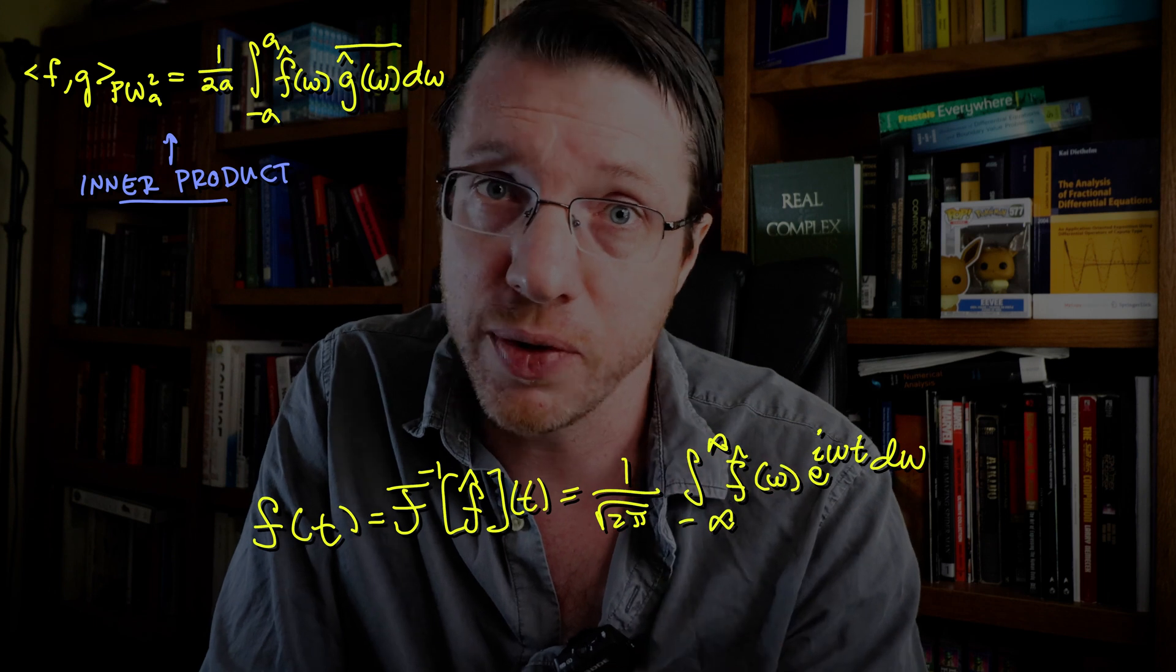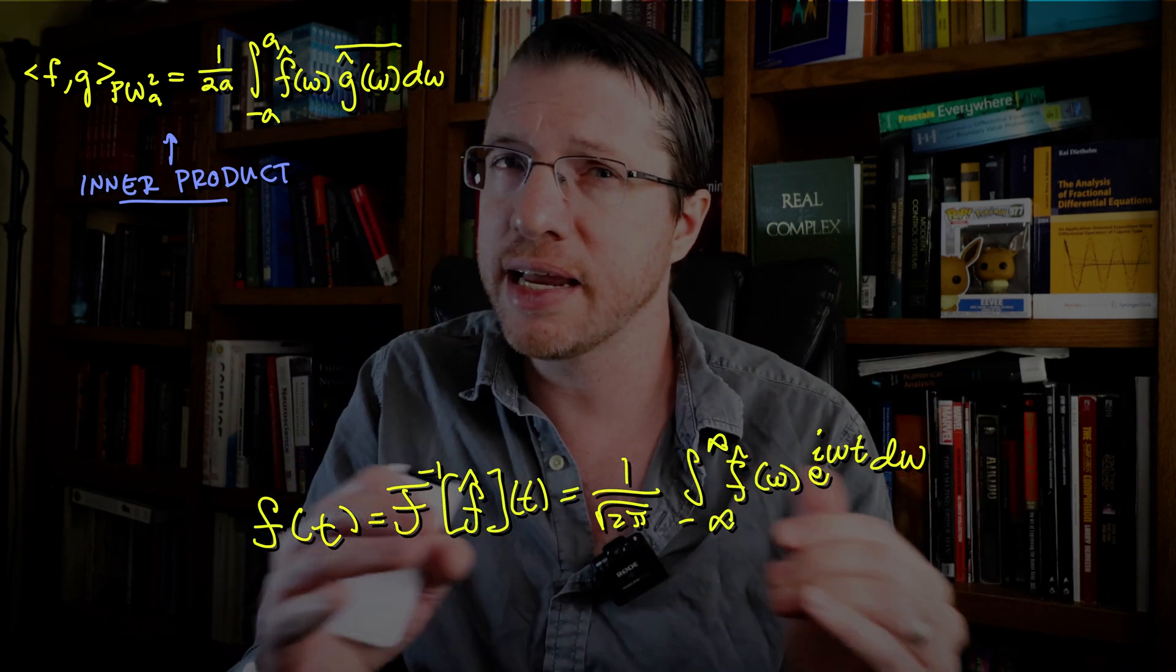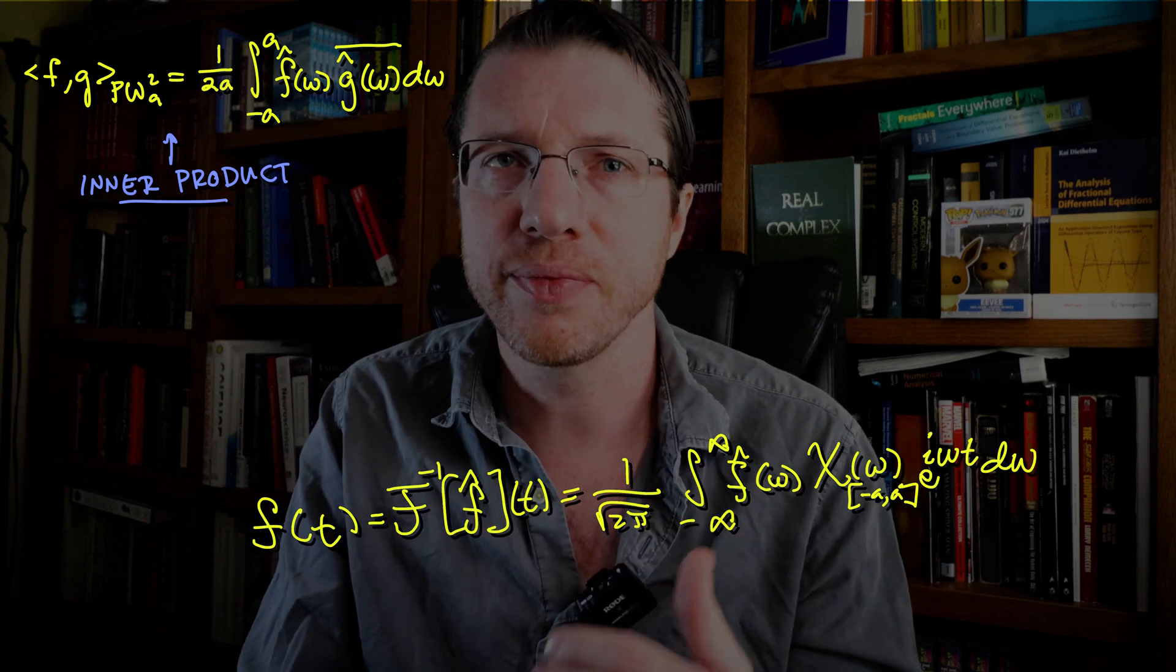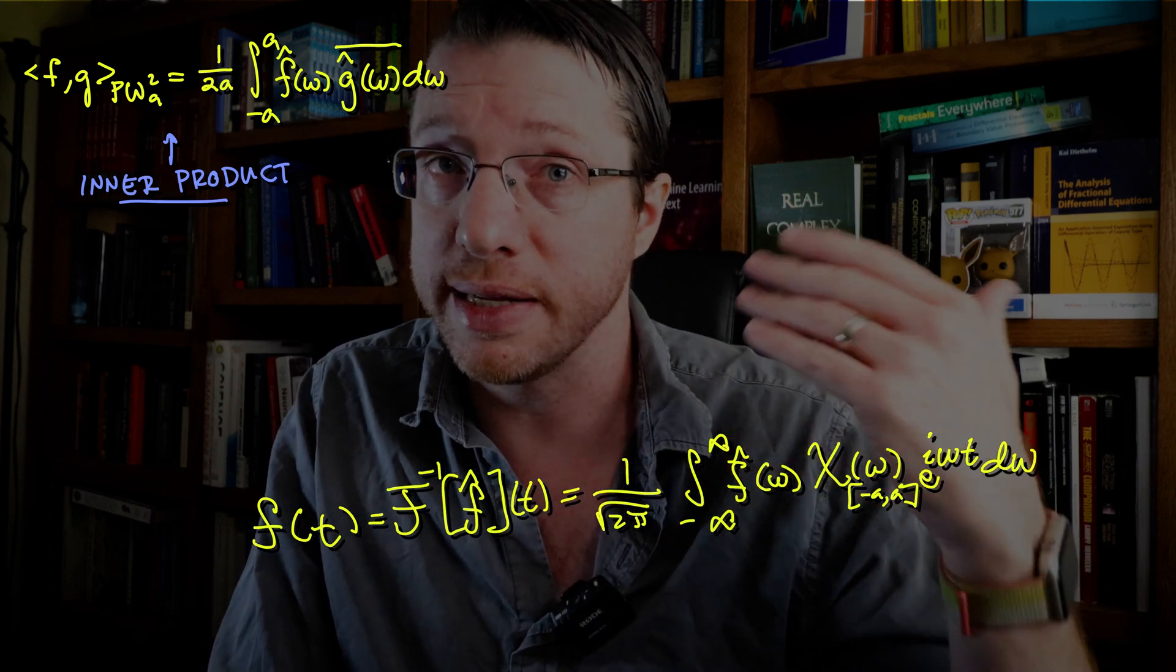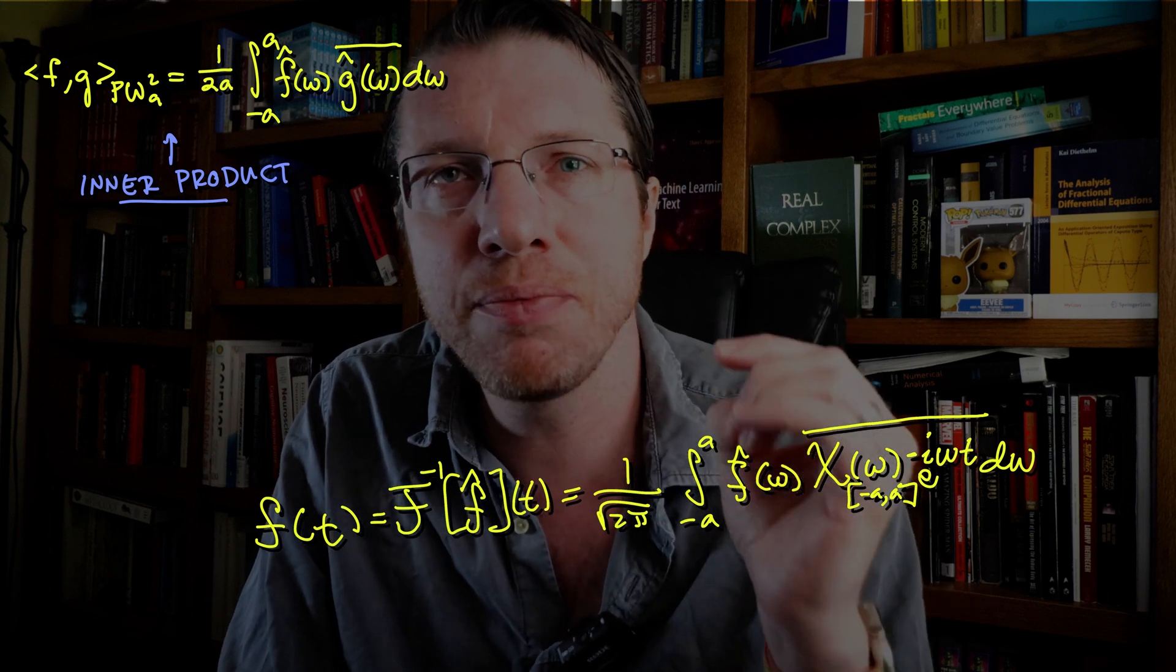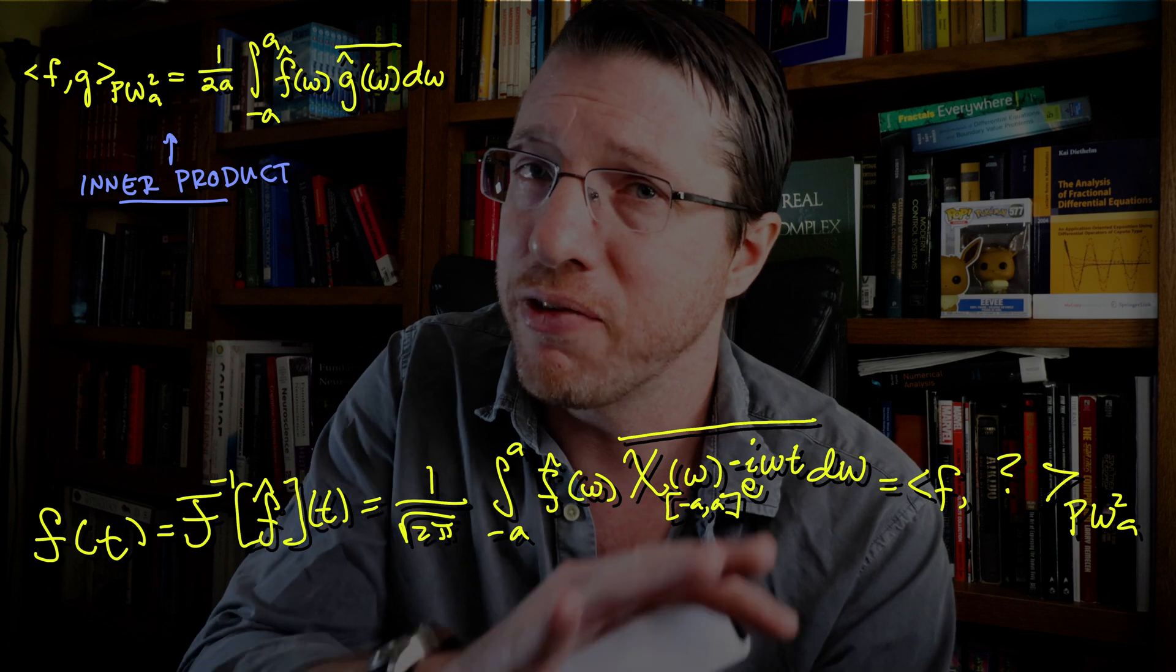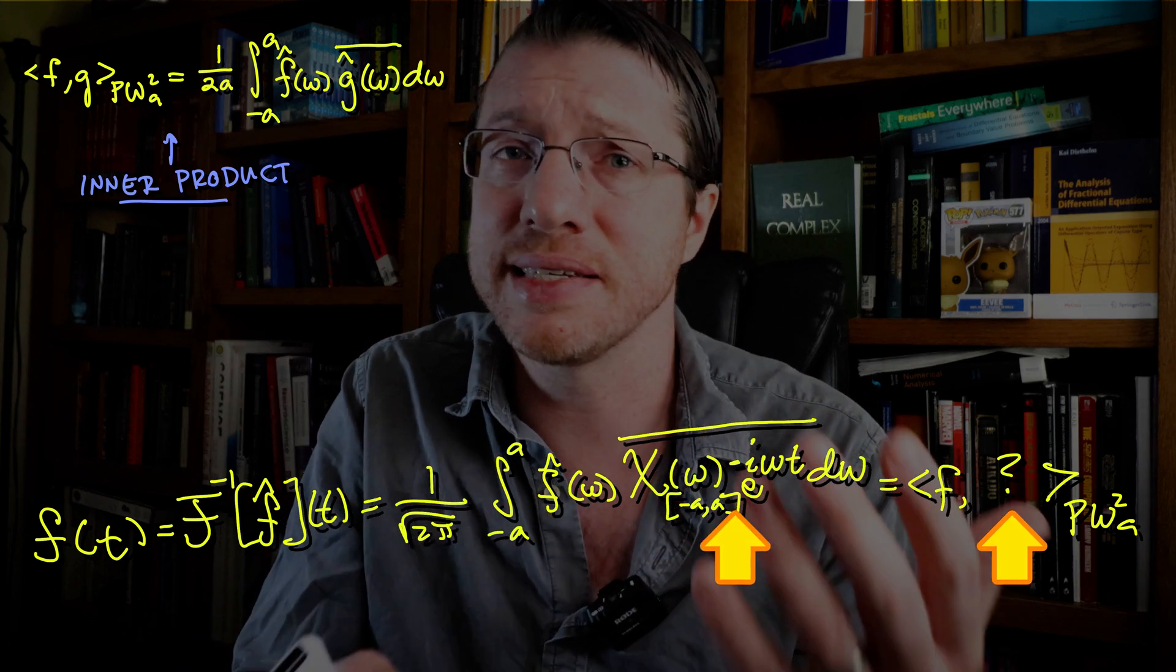We can quickly write down the inverse Fourier transform for a function from the space, and then instead of truncating to negative A to A, we can use the indicator function. Then if we look at the truncation integral, we see that we can evaluate a function at a time point t through the inner product, if we can figure out what that function is that has this as a Fourier transform.